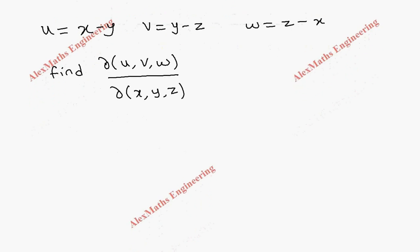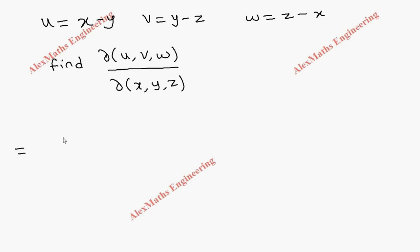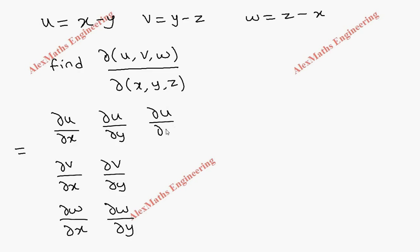We have to write the determinant for this which is ∂u/∂x, then ∂v/∂x, then ∂w/∂x. The same way, the second column is ∂u/∂y, ∂v/∂y, ∂w/∂y.